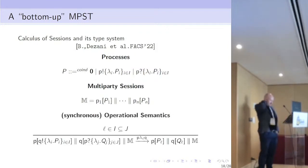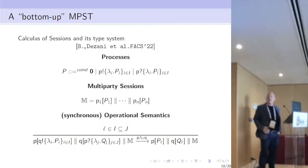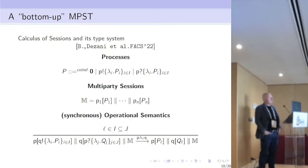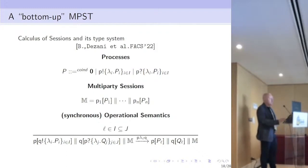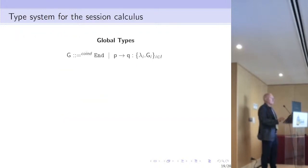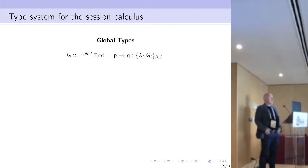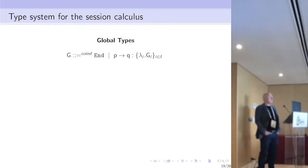Multi-party sessions are equipped with a synchronous operational semantics. If P and Q are willing to send and receive some messages respectively from each other, the communication can be fired. For this calculus there are global types which describe the possible overall behavior of a system.